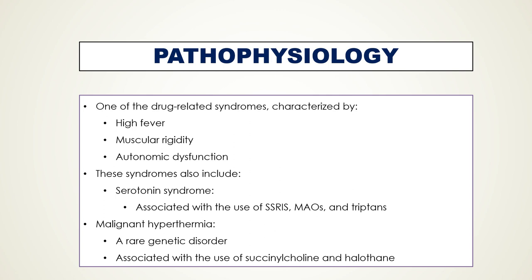Neuroleptic Malignant Syndrome is one of the drug-related syndromes characterized by high fever, muscular rigidity, and autonomic dysfunction. These syndromes also include Serotonin Syndrome, associated with SSRIs, Monoamine Oxidase Inhibitors, and triptans such as sumatriptan, as well as Malignant Hyperthermia, a rare genetic disorder associated with depolarizing muscle relaxants like succinylcholine and halogenated anesthetics such as halothane.